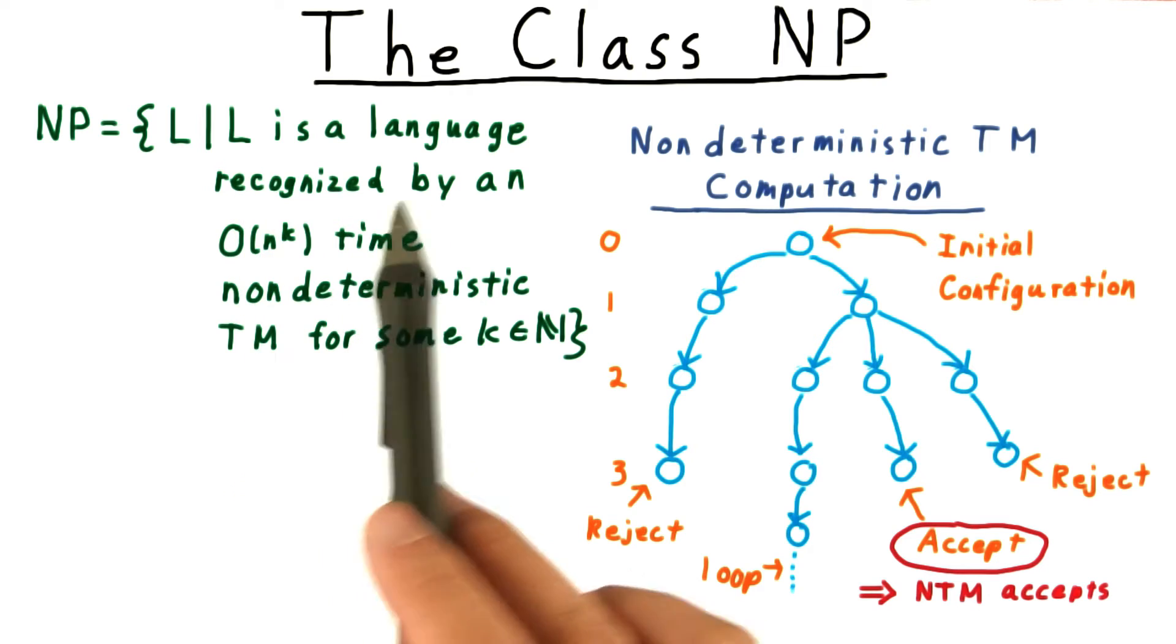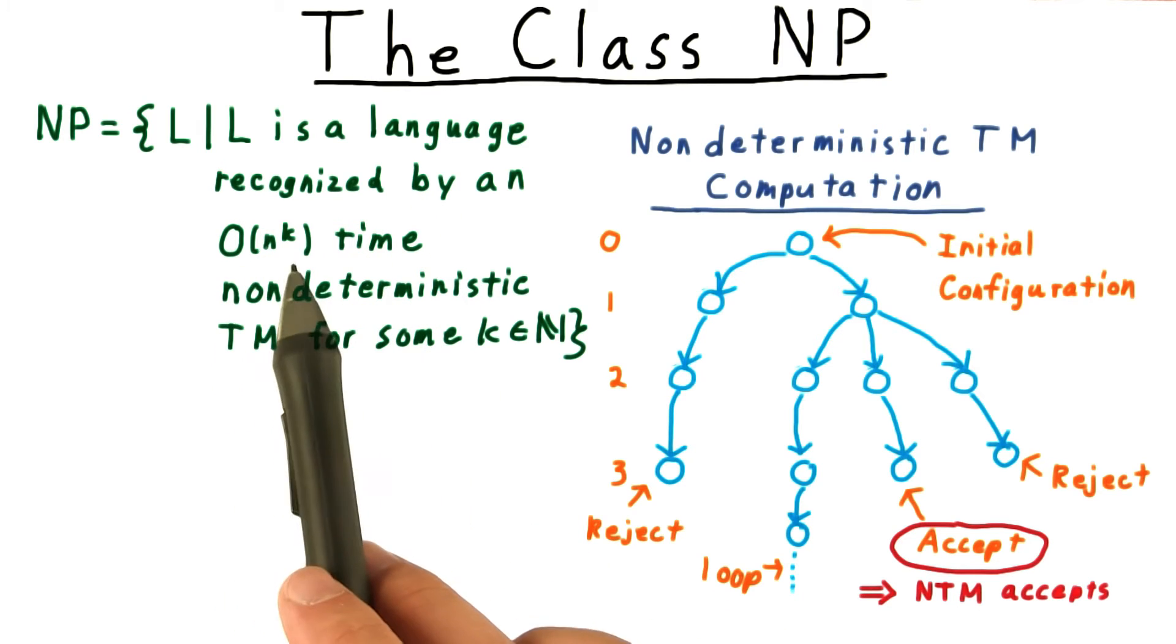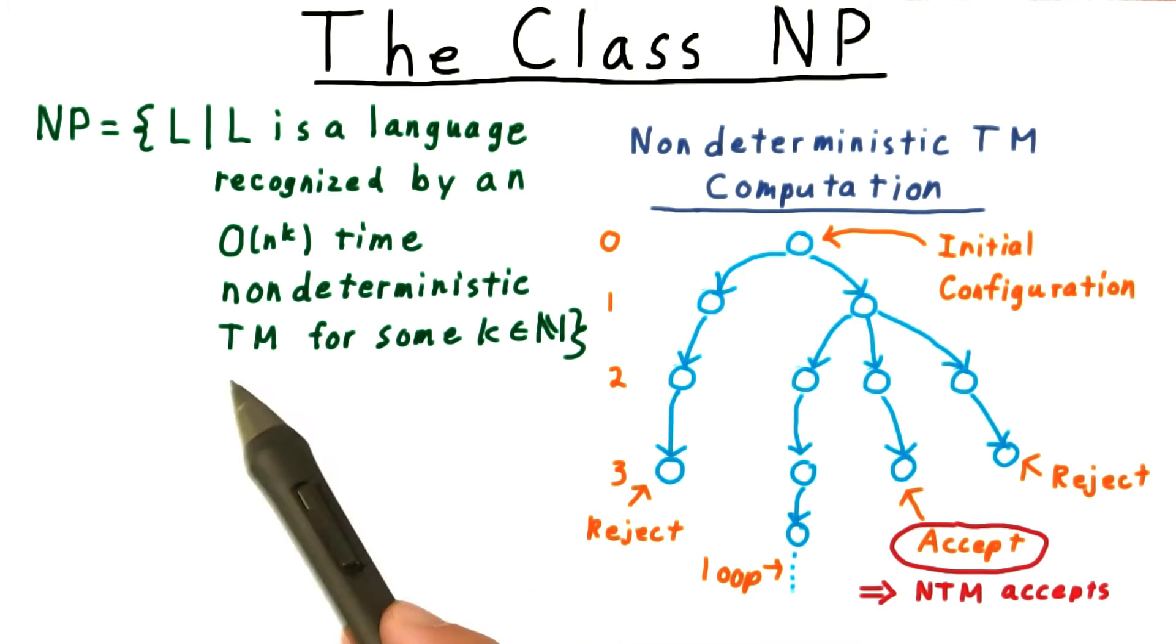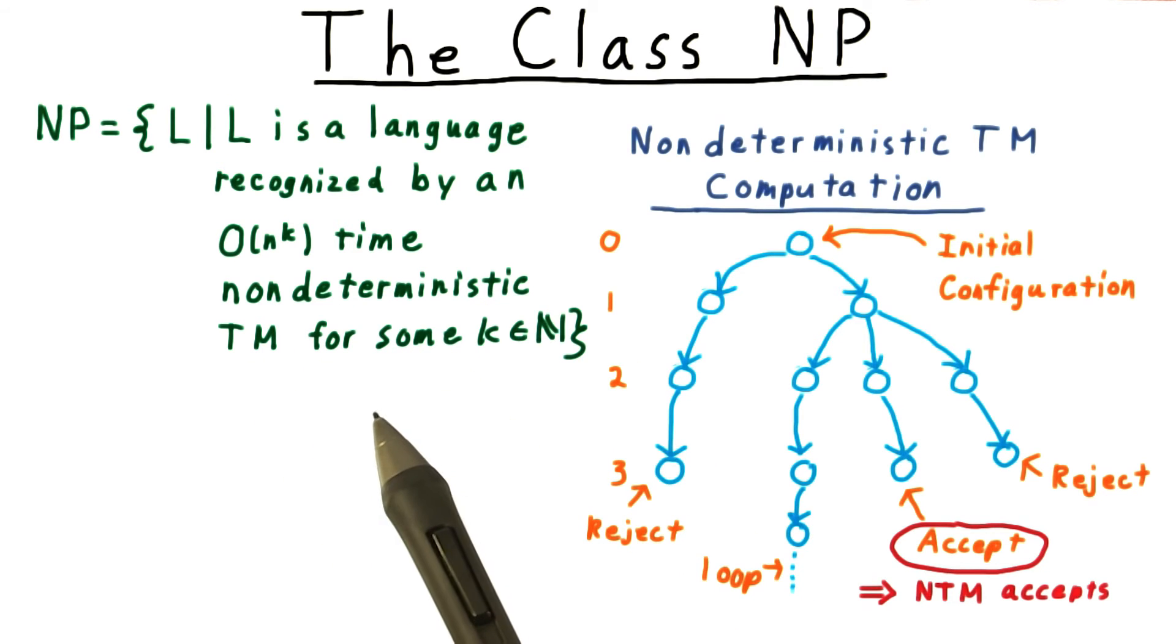NP, then, is the set of languages recognized by an O(n^k) non-deterministic Turing machine, where k is some natural number. Or, in other words, it's the set of languages recognized in polynomial time by a non-deterministic machine.